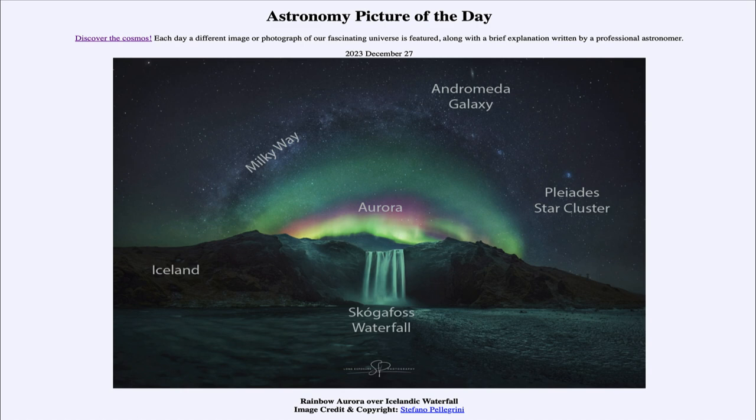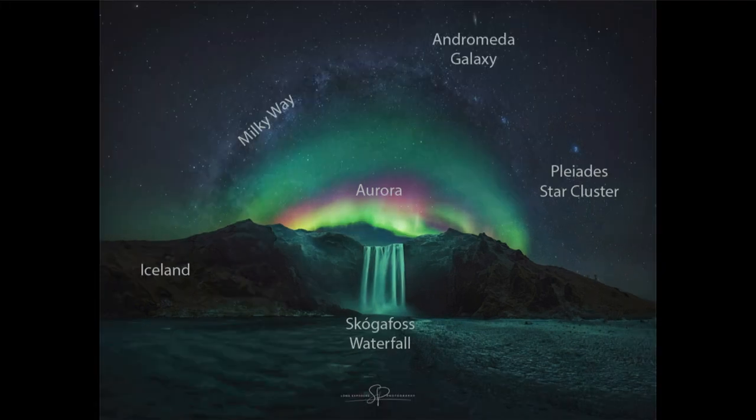So what do we see here? We see in the foreground the waterfall, and we can tell that that is labeled there. Just above it, we can see the aurora. Now we have what's kind of a rainbow aurora here.